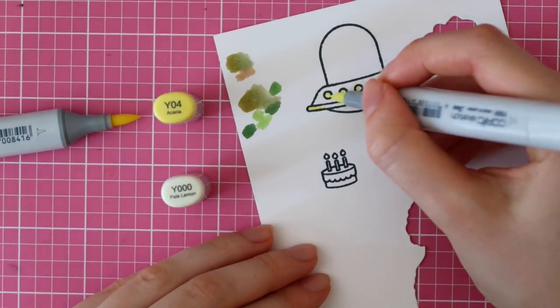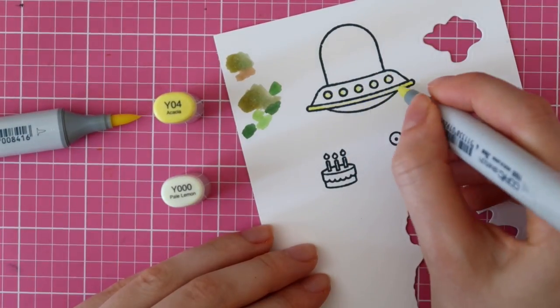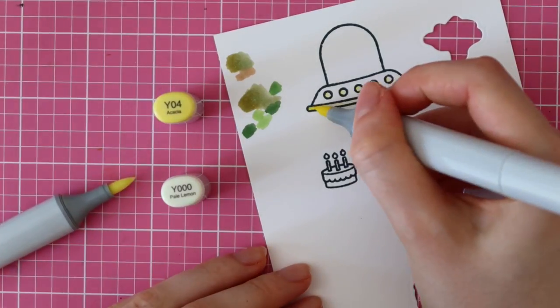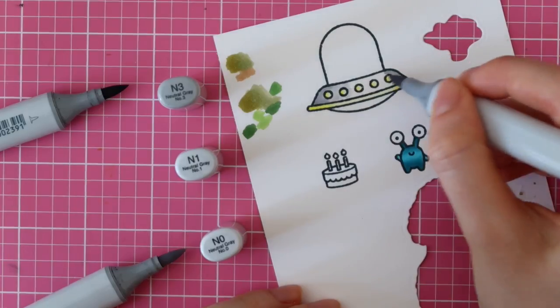Then for the spaceship, I'm using Y04 and Y000. This is just a really light yellow color combination.